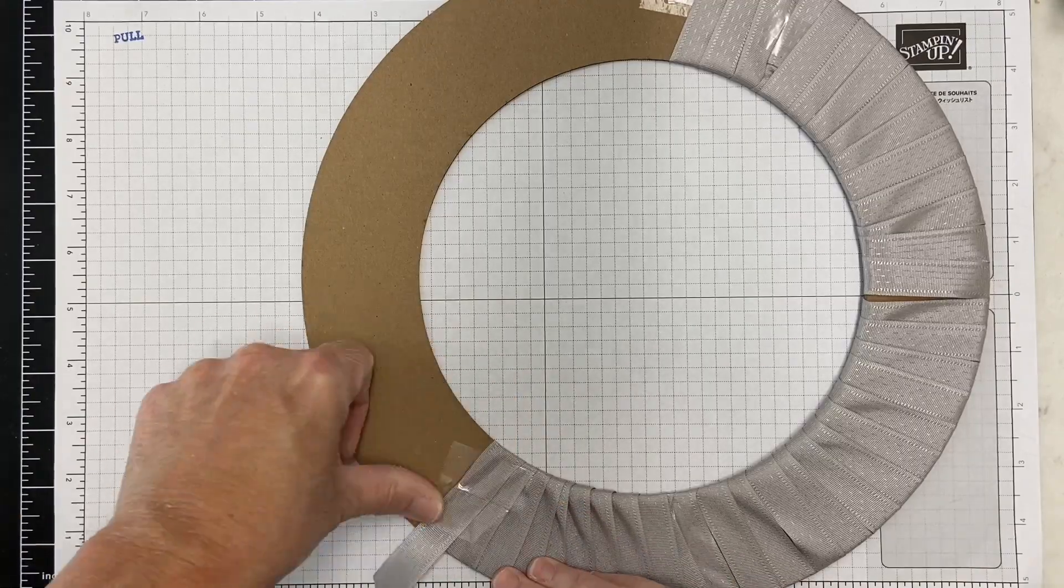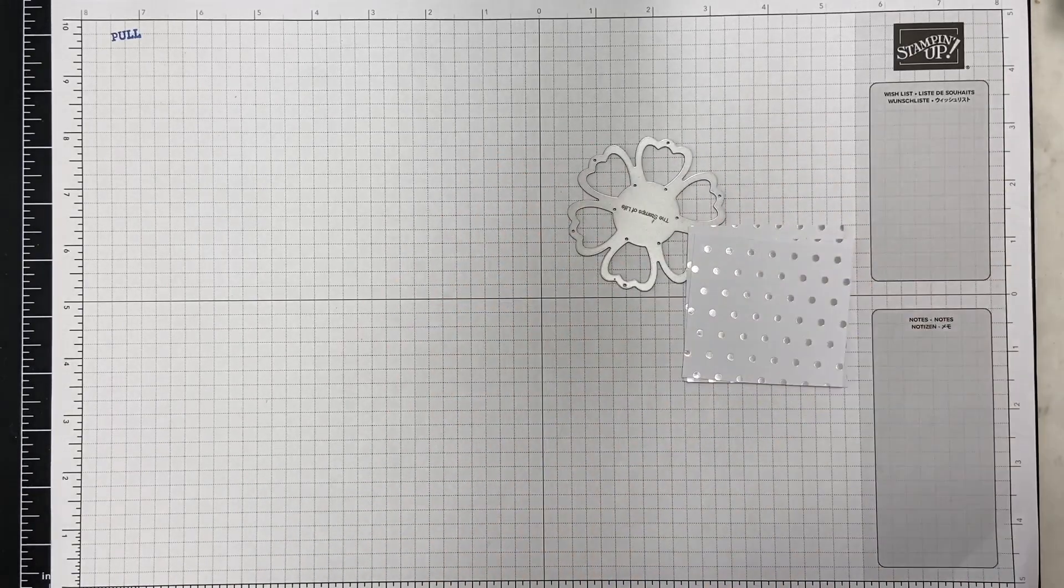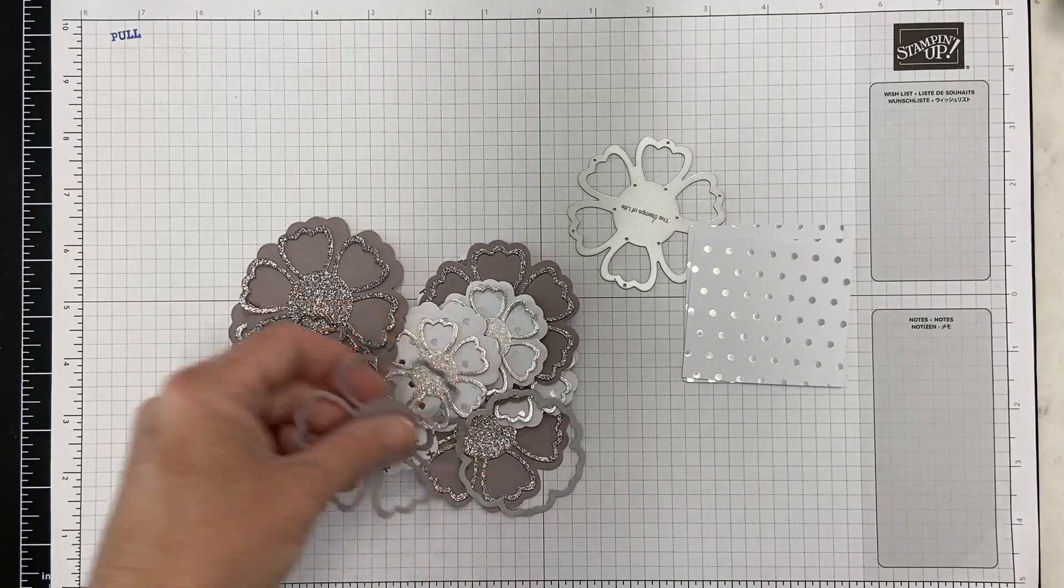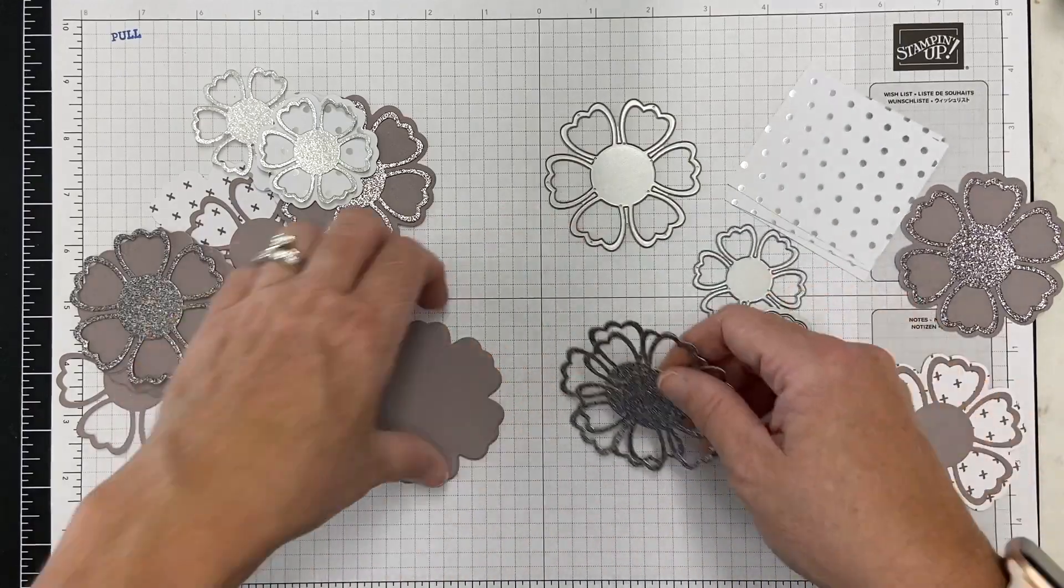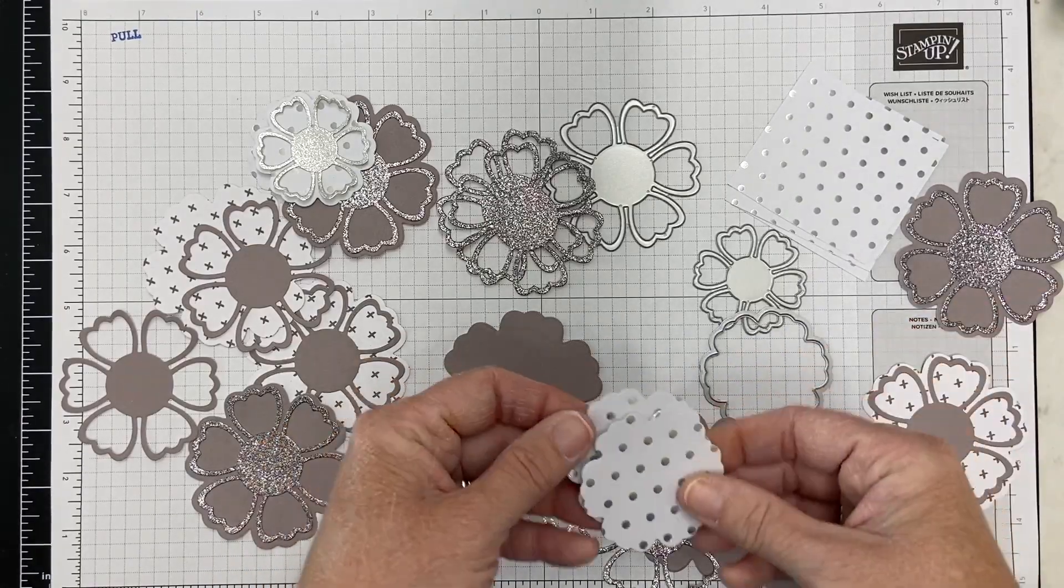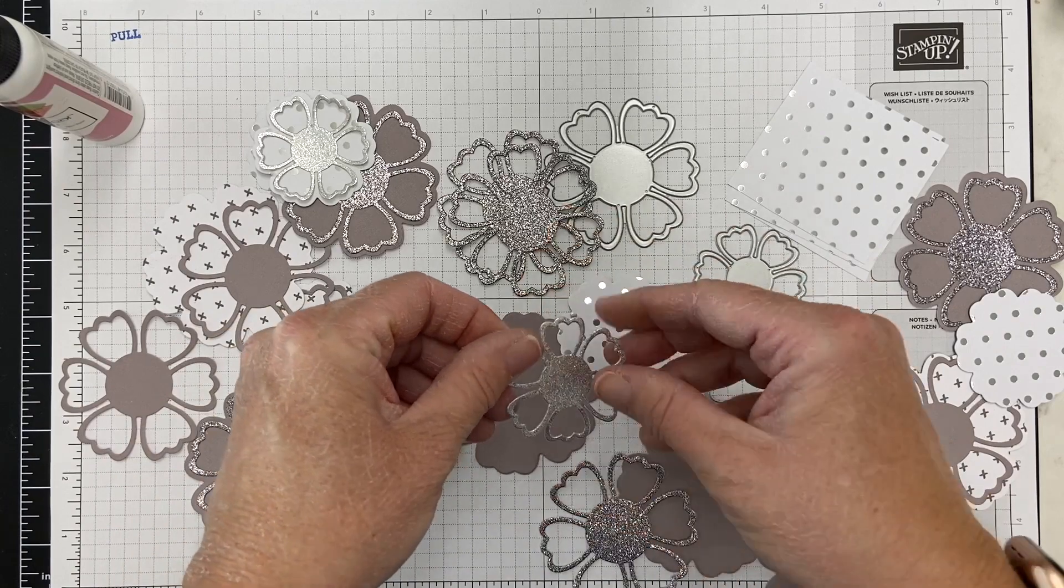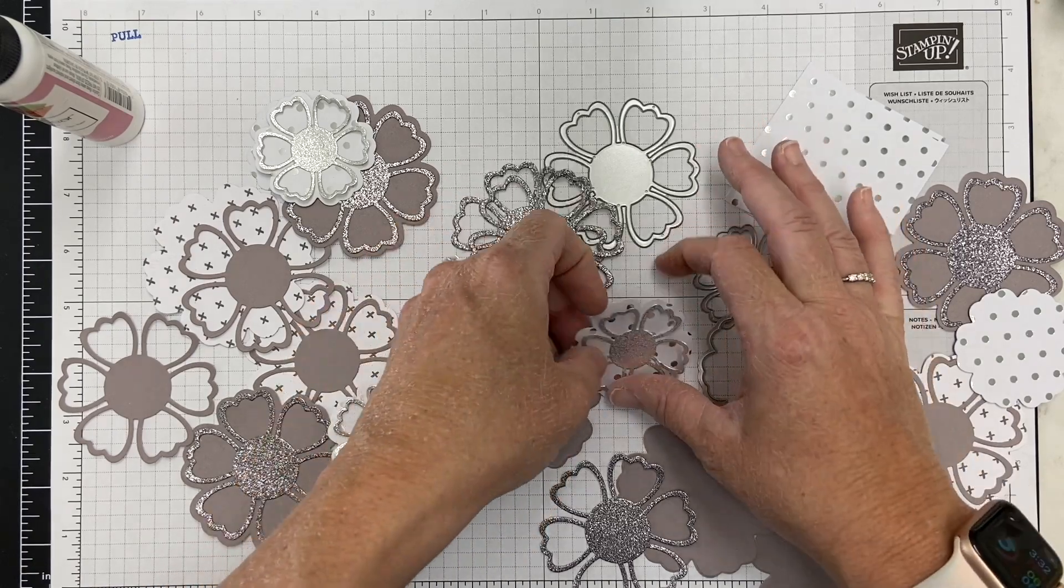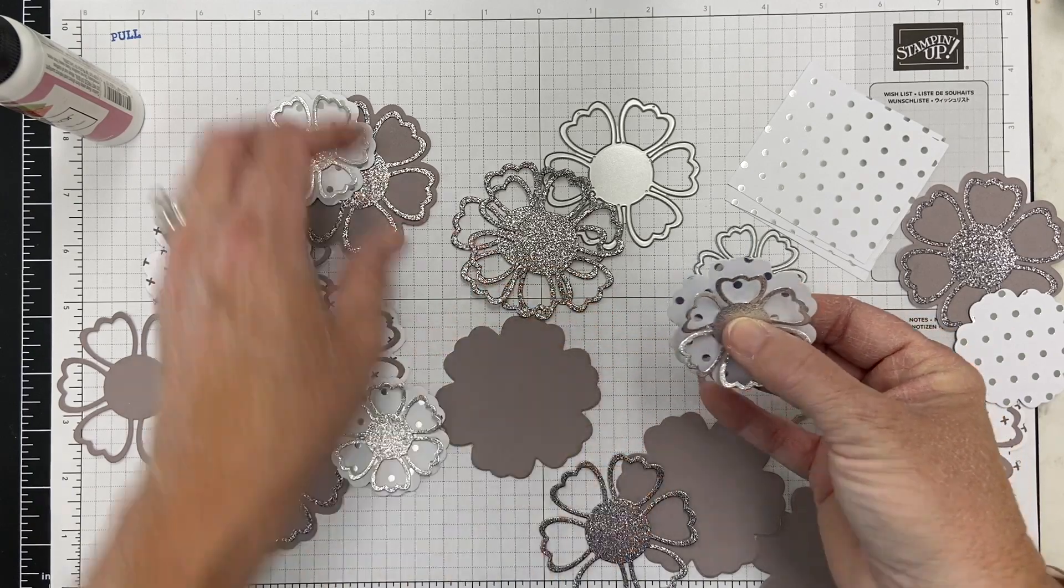You could hot glue it or you could use tape as well. I'm doing this part pretty fast because you get the idea. It took several minutes to do this but I did about half of the wreath with it. Then I'm going to fill up the rest with some of these gorgeous flowers. I used a lot of the paper from the paper pad and had so much fun.